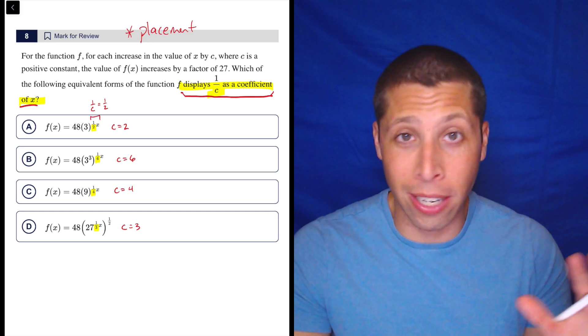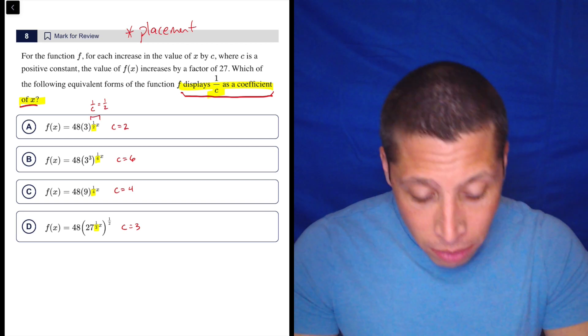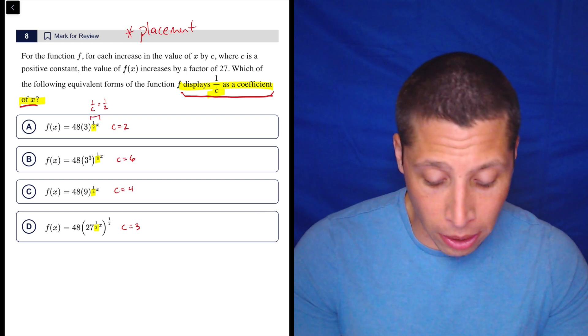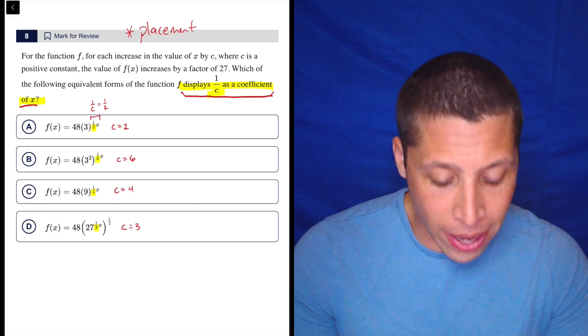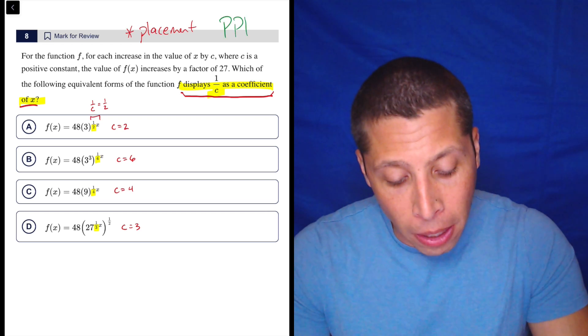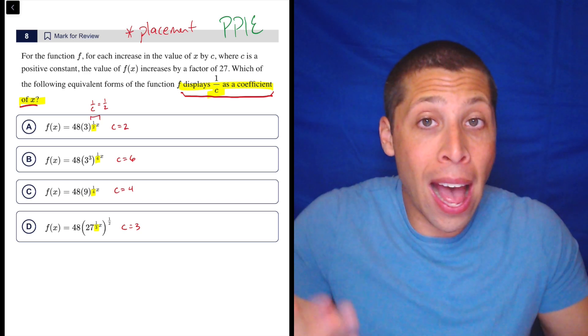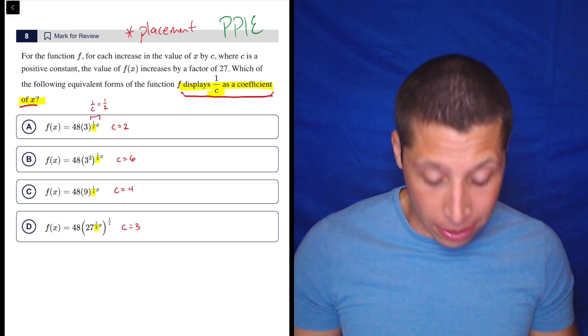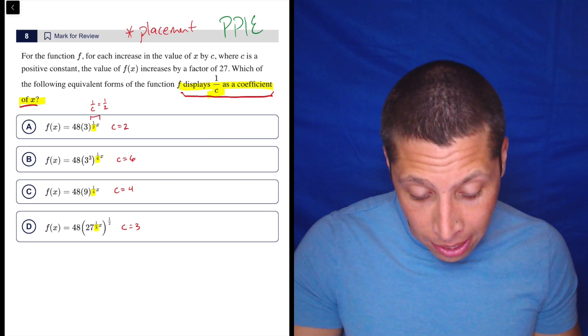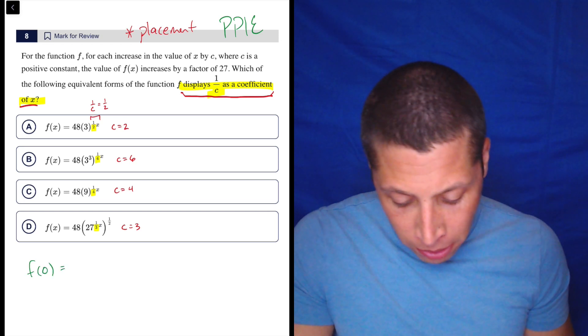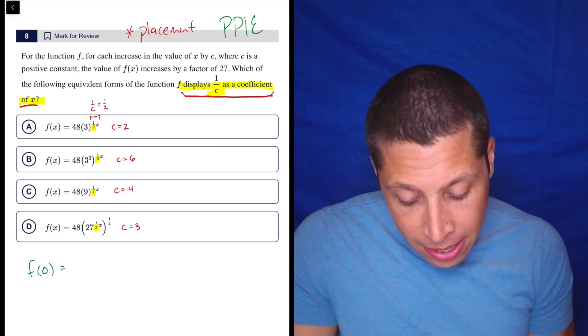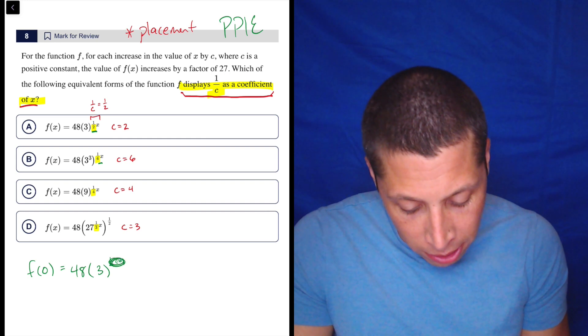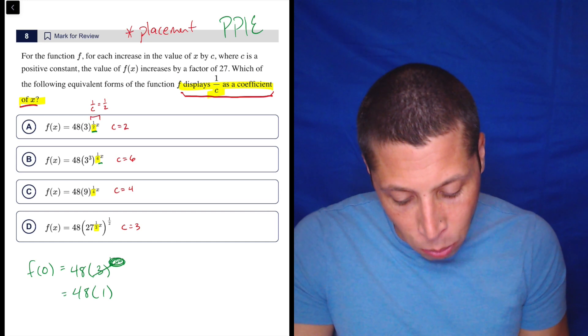That's really poorly worded and difficult to understand, but that's what they mean. So now we can follow the other part of the question. For the function f, for each increase in the value of x by c, where c is a positive constant, the value of f(x) increases by a factor of 27. Now I'm going to plug points into equations because it's telling me to increase something but I don't know what I'm starting with. So I'm going to start with the easiest point. Let's do f(0). Since these are all exponents, if I made those zeros, 48 times 3 to the 1/2 of 0. Well, 1/2 of 0 is 0, 3 to the 0 is 1. So this thing is 48 times 1, which is just 48.